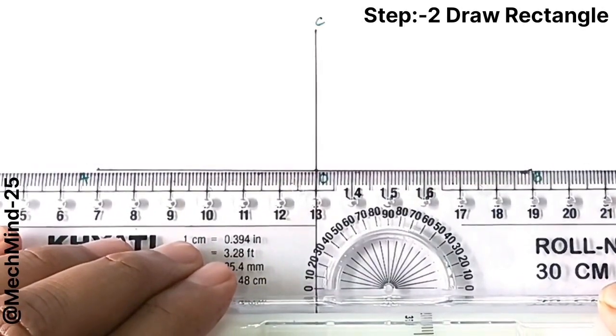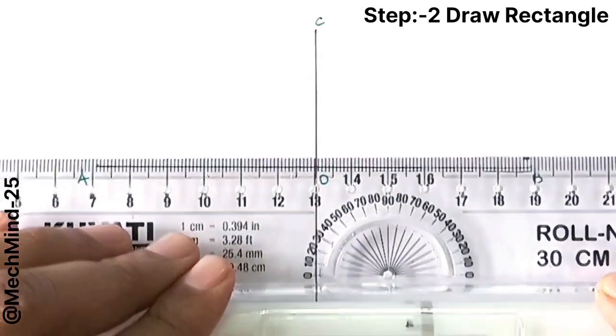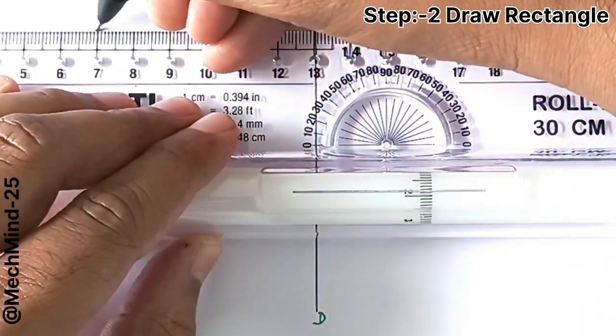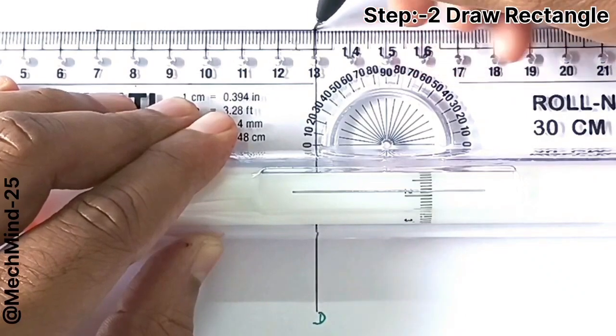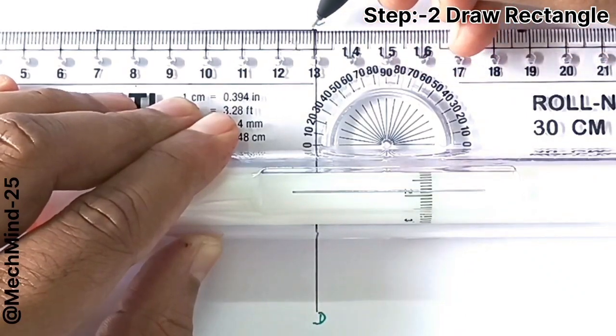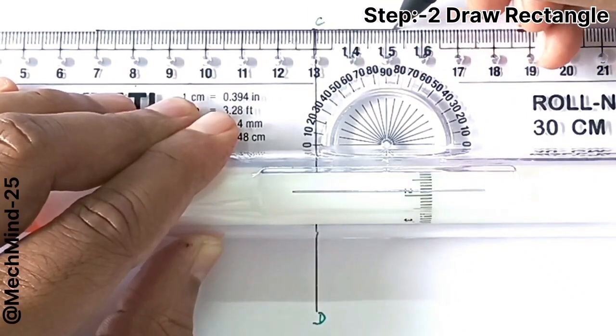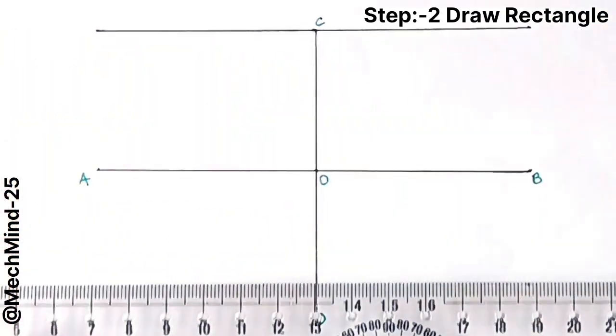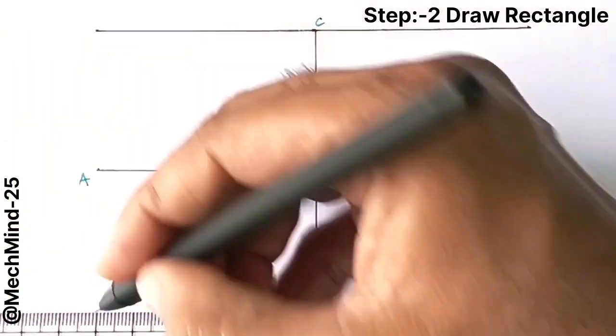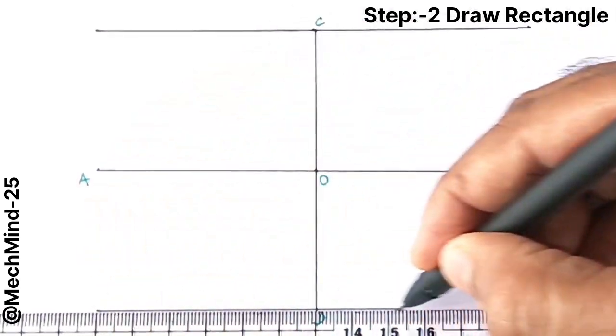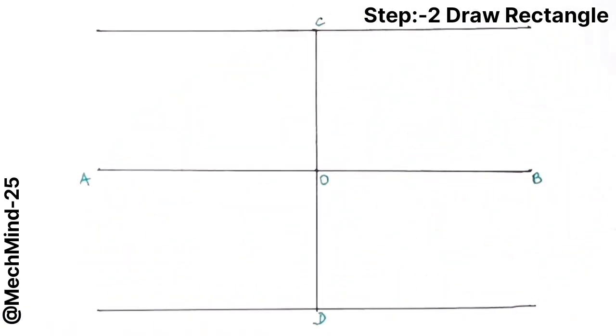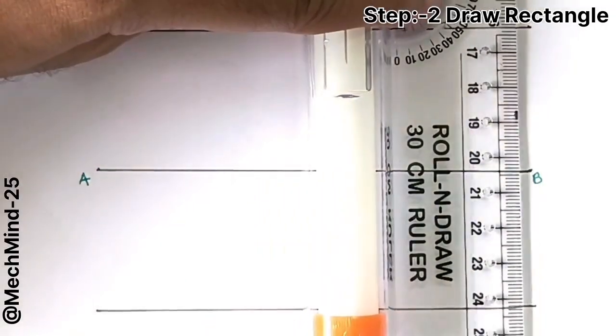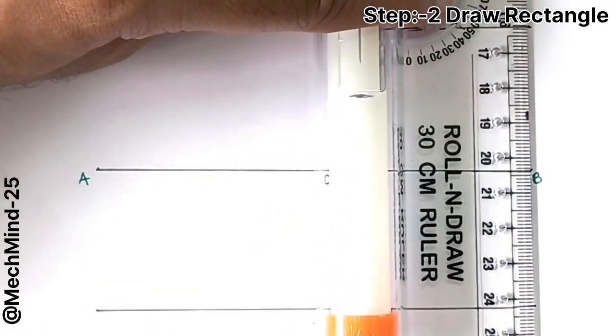Next step is drawing the rectangle. Using the major axis and minor axis, draw a rectangle. Set your roller scale properly on the major axis and draw a parallel line from point C and point D. Next, set the roller scale on the minor axis and draw a parallel line from point A and point B.